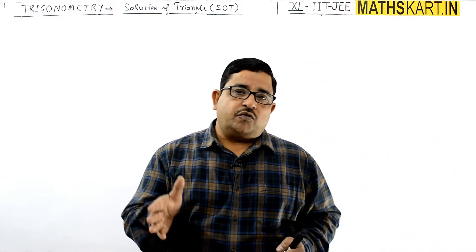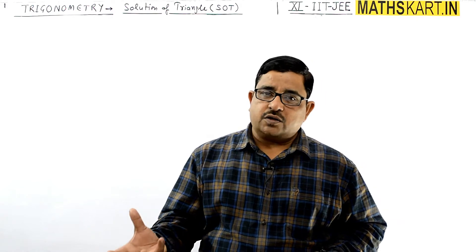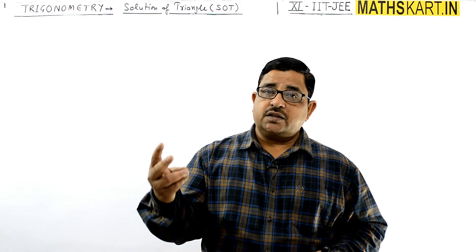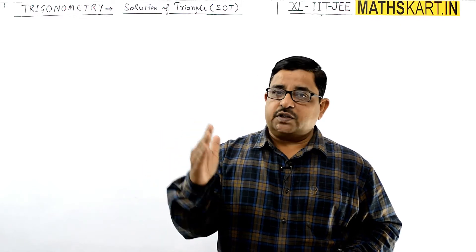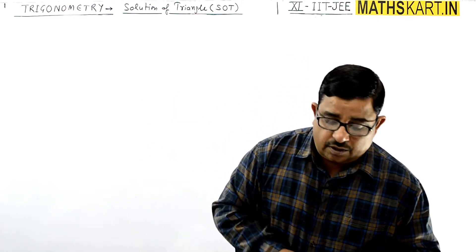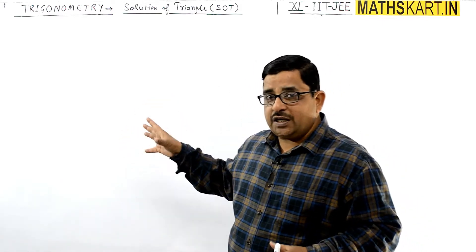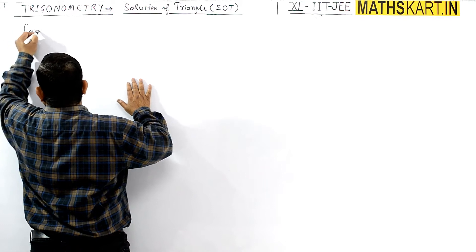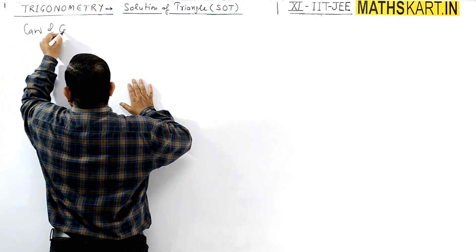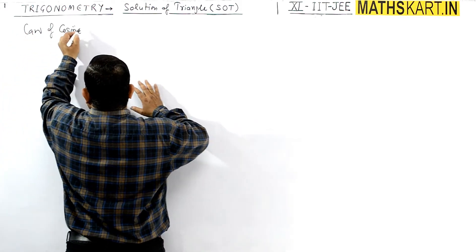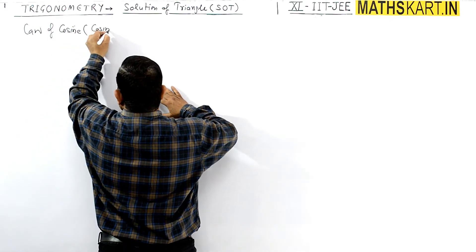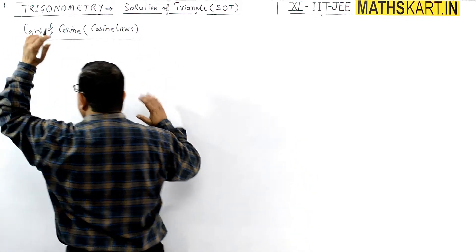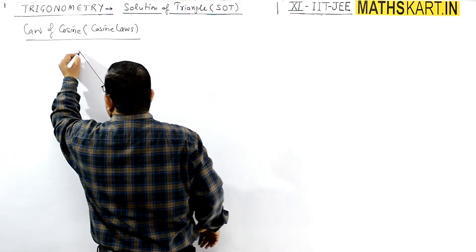Next is the Law of Cosines, also called the cosine law or projection formulas. After this we will take questions. We will cover two more sets of formulas — six formulas in total — known as the Law of Cosines. There are three cosine laws for a triangle.